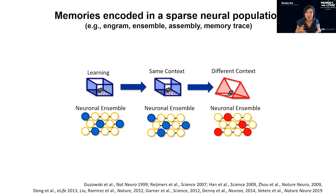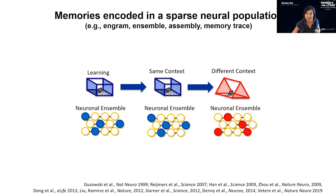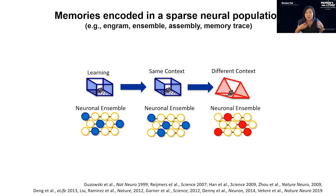Sheena Josselyn, one of the pioneers of memory engram research also in the symposium today, was one of the first to show that selectively silencing just these engram cells could eliminate the memory. Steve Ramirez, along with Sheena Lu and Susumu Tonegawa's lab, were among the first to show that selectively reactivating this sparse neural population could artificially recall the memory.